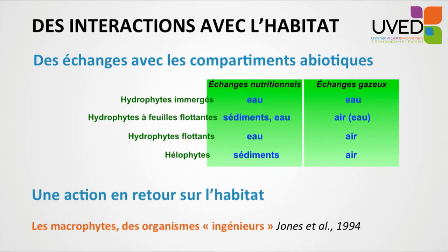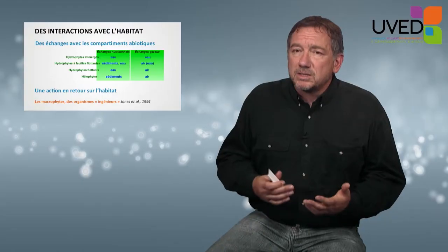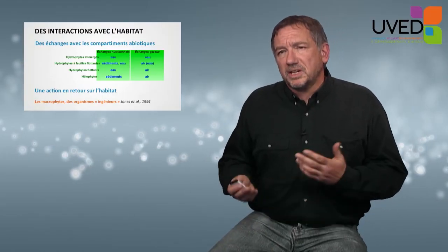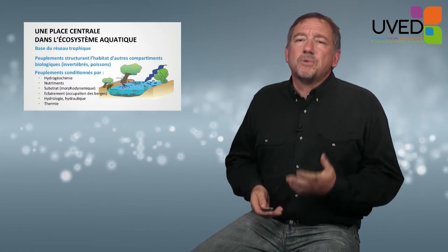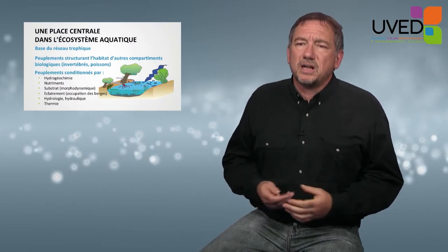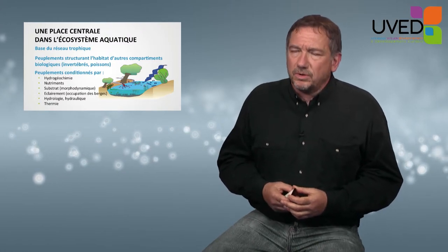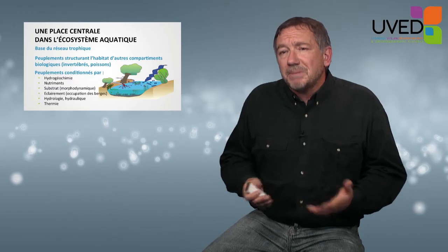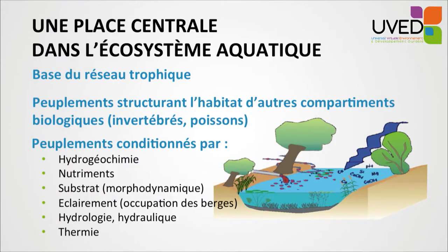Exchanges take place in different ways depending on the shape of the plant. The shape is not only a description — it plays a very specific role in the ecosystem. Macrophytes also have feedback actions on their habitat, causing local changes in water flow or in sediments. These vegetation species are primary producers and serve as the base of the trophic network, while also structuring the habitat for other ecosystem compartments such as invertebrates and fish.